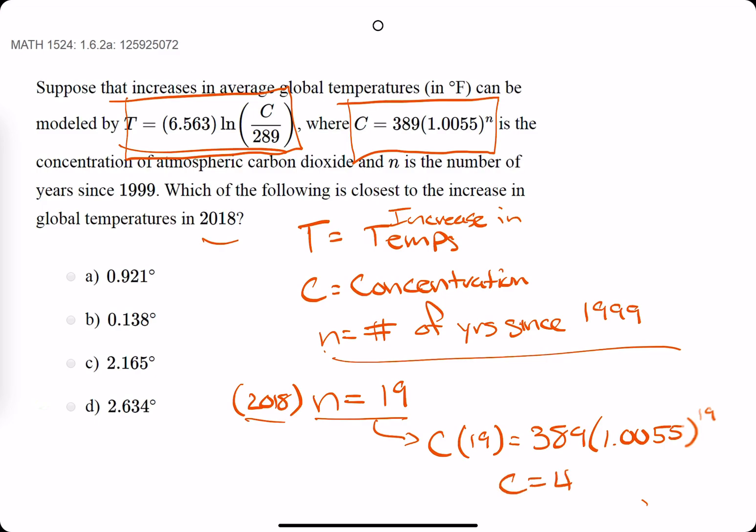So that is about 431.73. So C equals about 431.73. Okay, that's a good start. So we have our C value, but now we still need the increasing global temps, which is given by T.